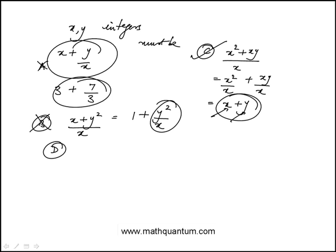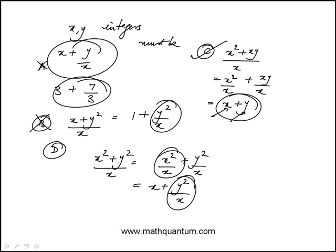Let me just for completion do D. Again, do the division. That's just x. That's an integer, but again, y square over x may or may not be an integer. So the answer is C.